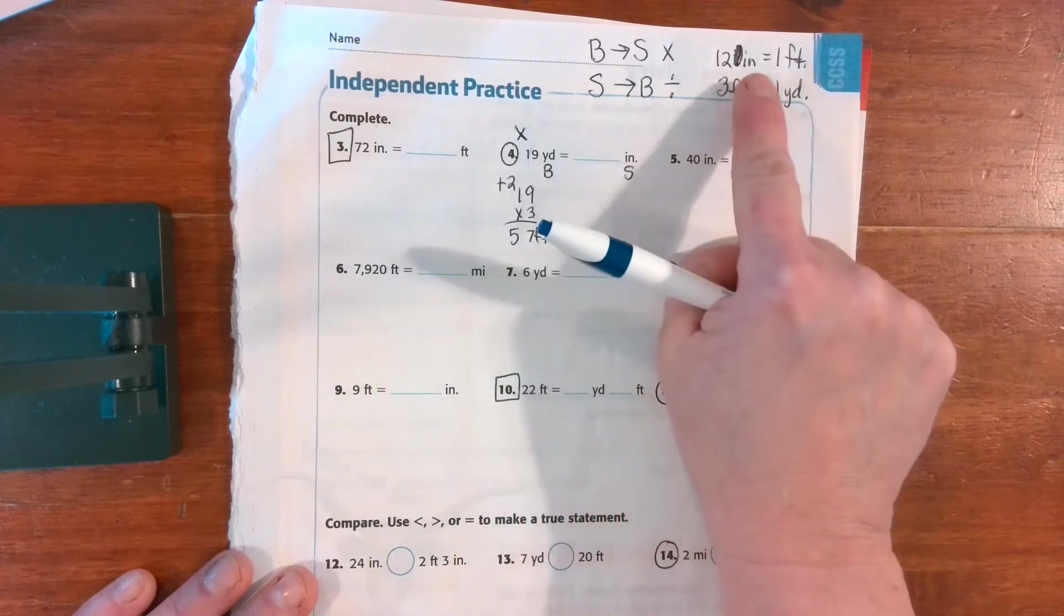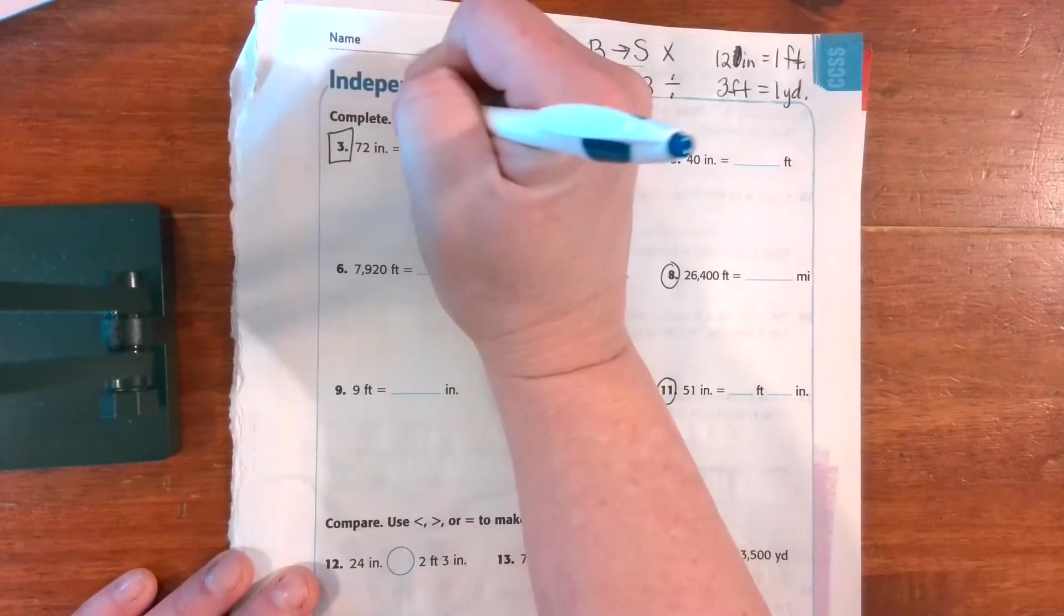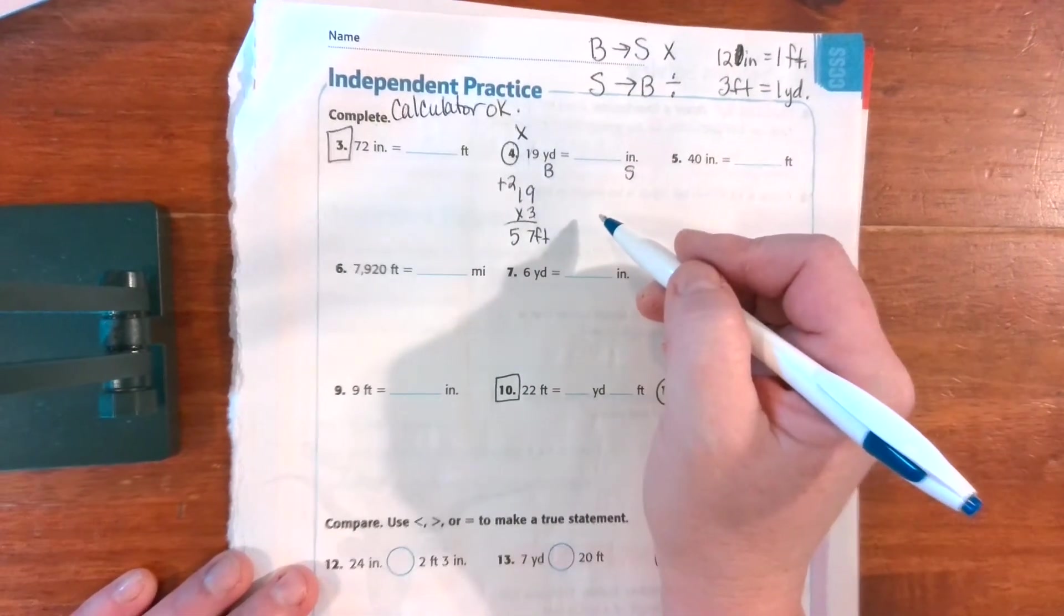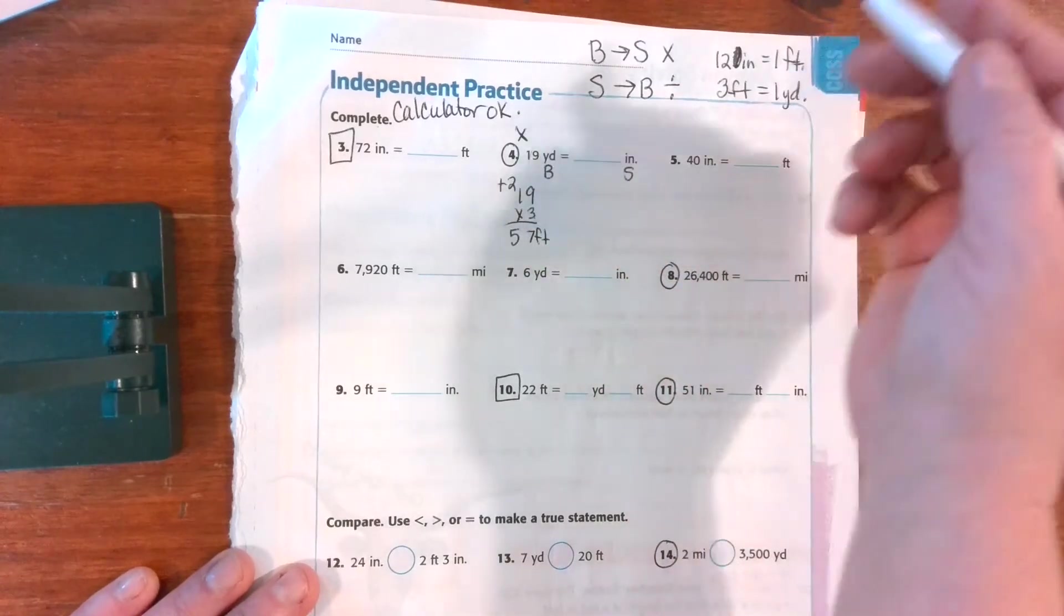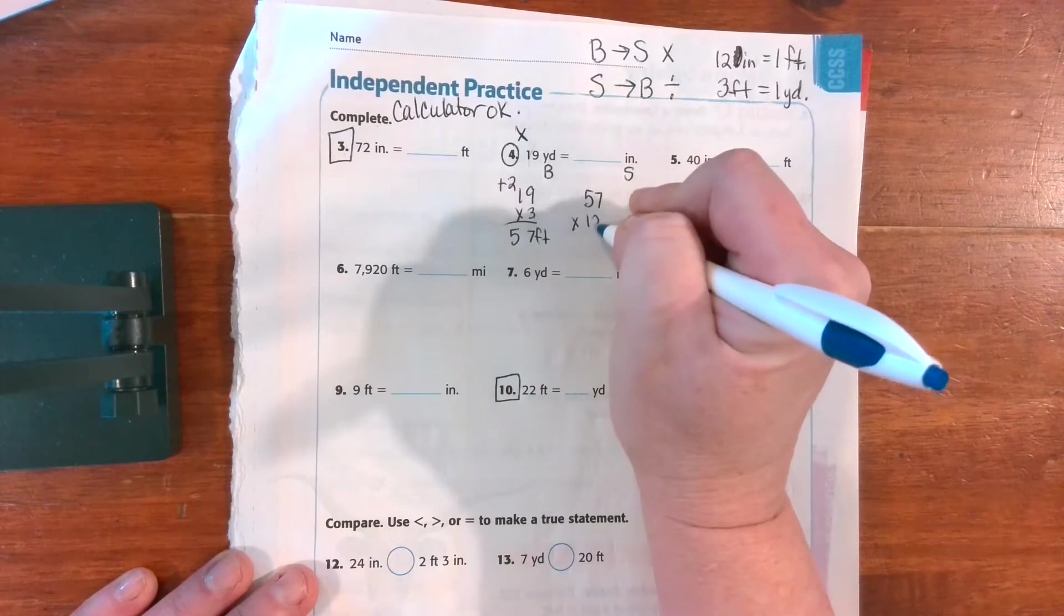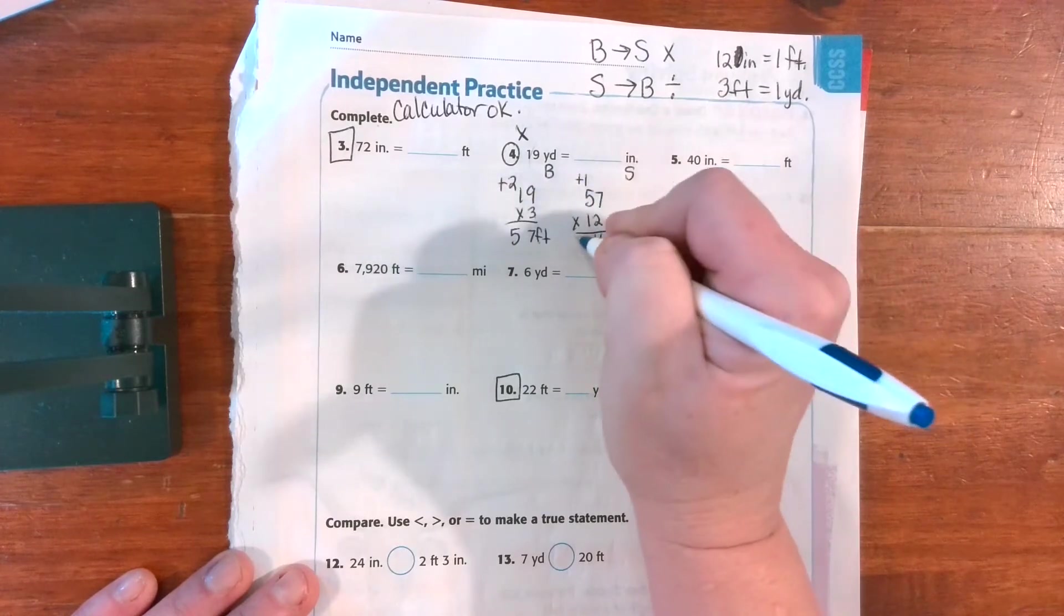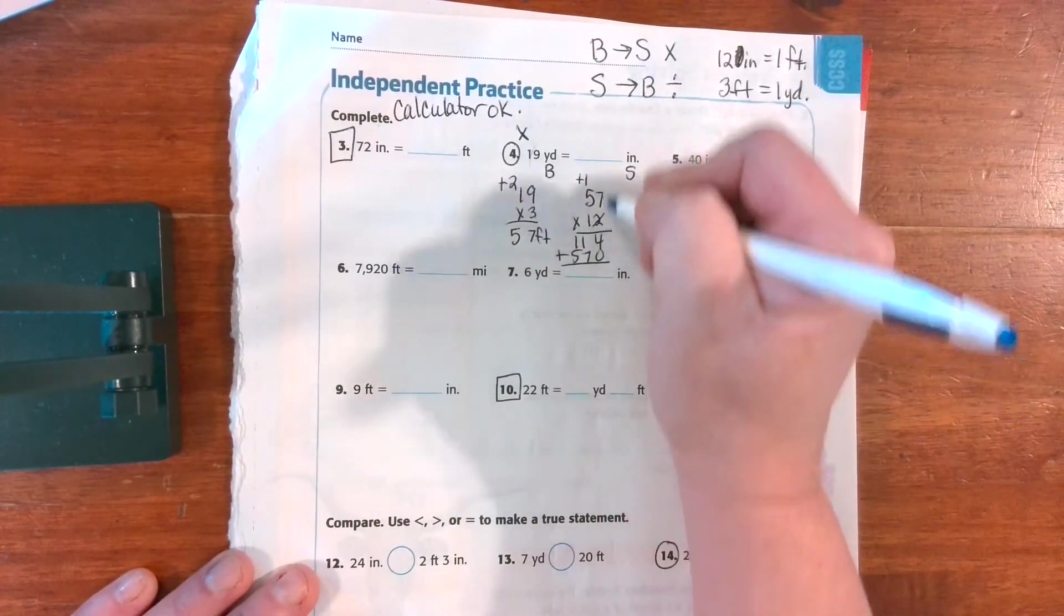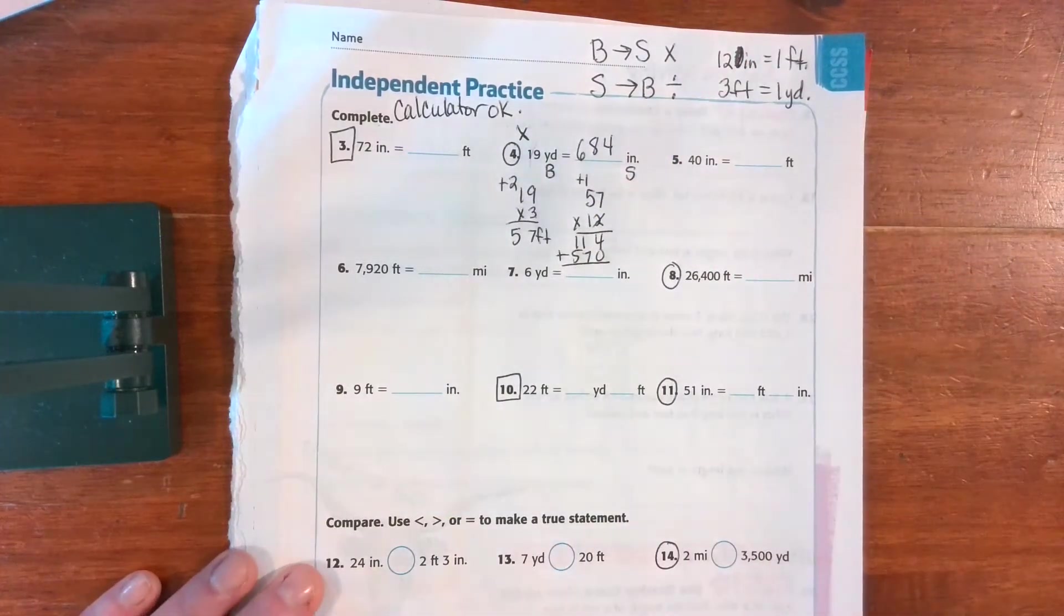But now I need to go feet to inches. And you're welcome to use calculators for these. I want you to focus on the procedures. So if you want to use a calculator to help with the math, that is perfectly fine. All right, so we're going to go 57 because we know I need 57 groups of 12. 2 times 7 is 14, carry the 1. 2 times 5 is 10 plus 1 is 11. Write my 0. 1 times 7 is 7, 1 times 5 is 5. Now we're going to add: 4 and 0 is 4, 7 and 1 is 8, and 5 and 1 is 6. 648 inches. So this was a two-stepper.